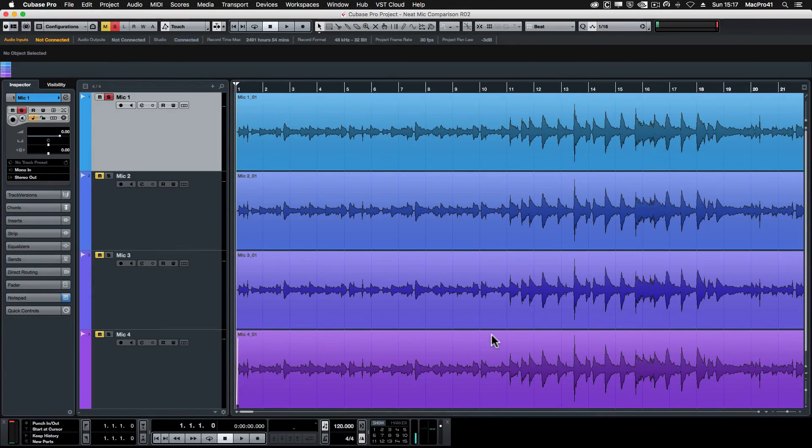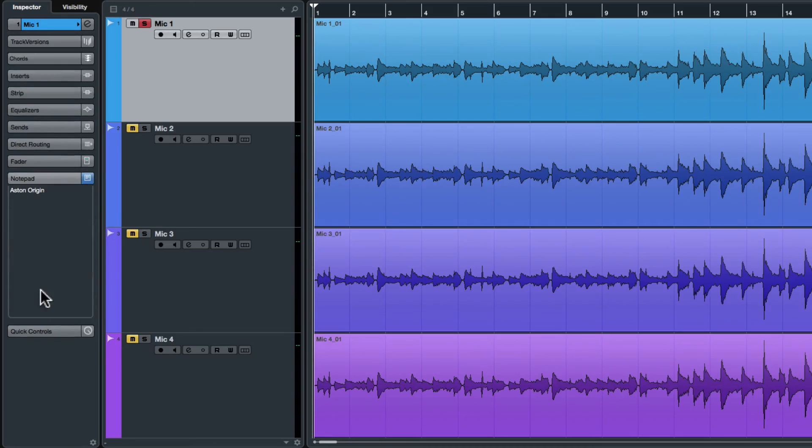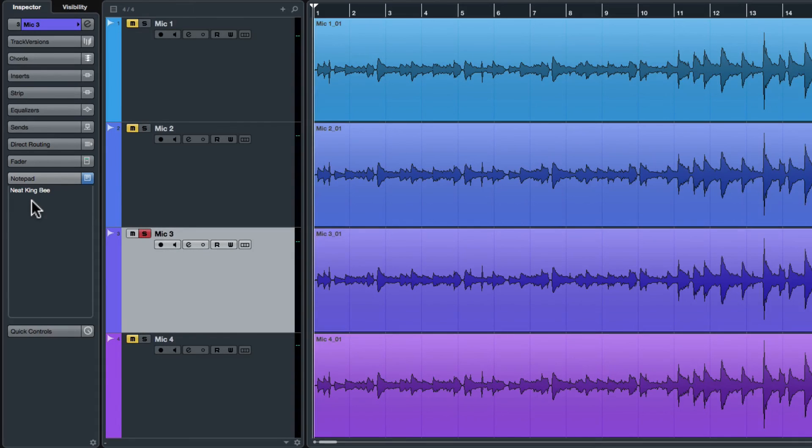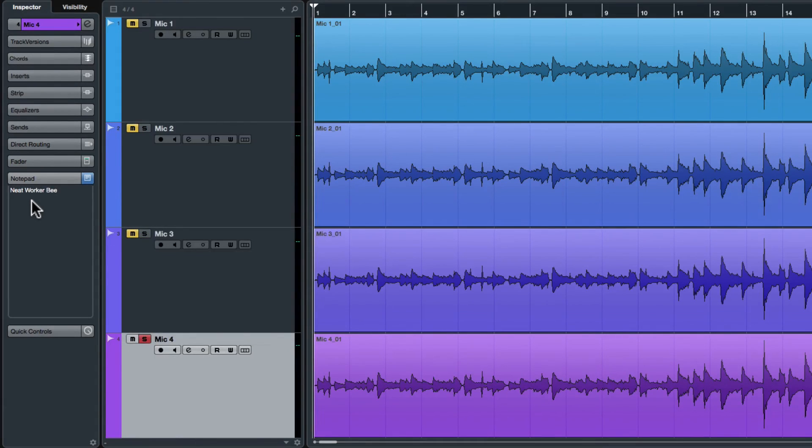And just to review which microphone was which inside of Cubase, microphone number one was the Aston Origin, microphone number two was the Audio-Technica AT4050, microphone three was the Neat Kingbee, and finally, microphone four was the Neat Workerbee.